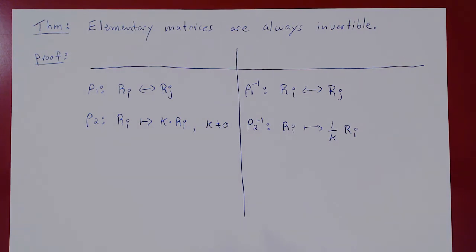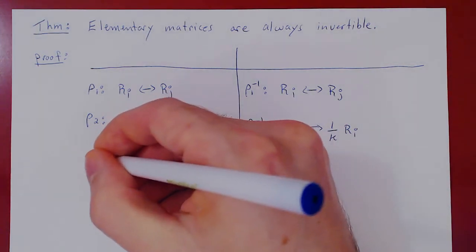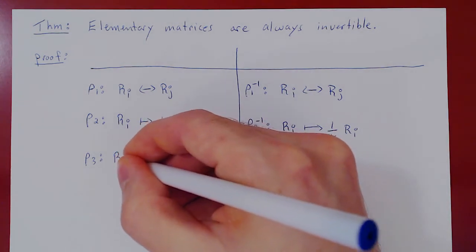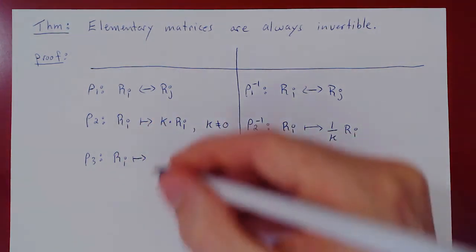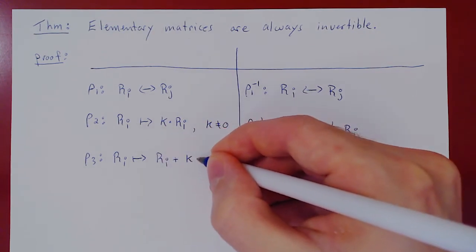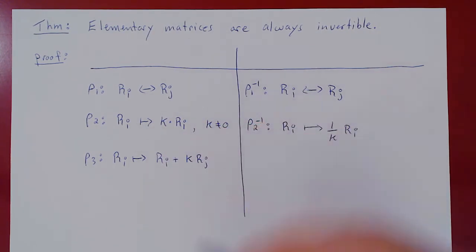And finally, the third type of row operation. This is taking a row, say row i, and transforming it by taking row i and adding to it a multiple of another row: row i plus k times row j.